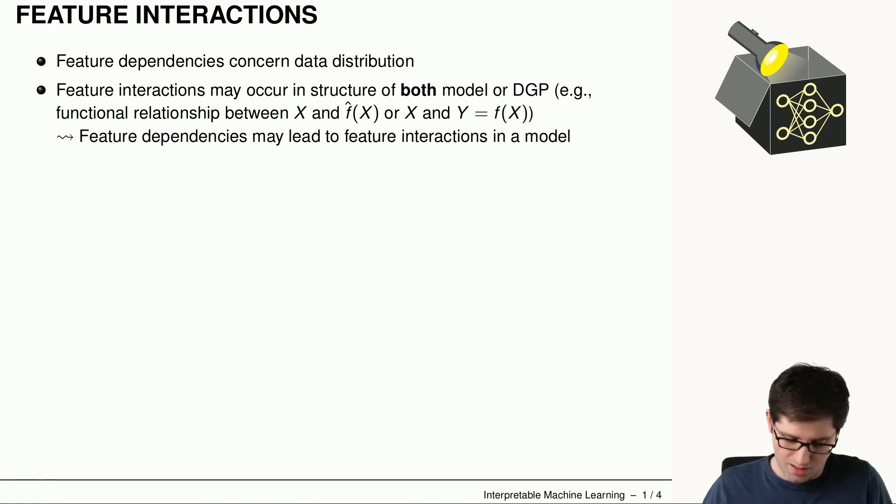For example, if we have a model f hat which predicts a target based on features x, it can contain interactions between multiple features. A data generating process, which is usually a true underlying not known relationship between the features x and the target y, here also an interaction between multiple features can be present.